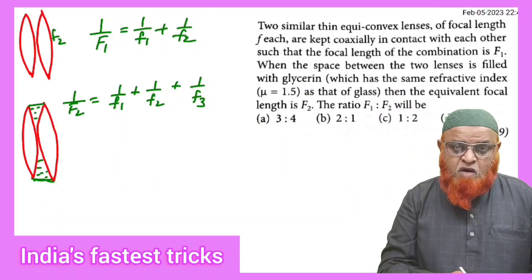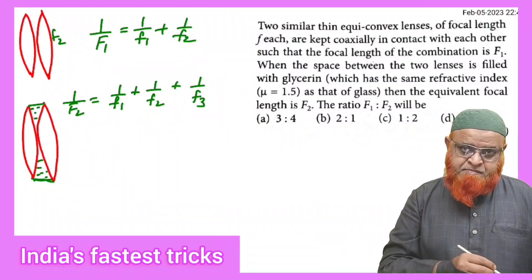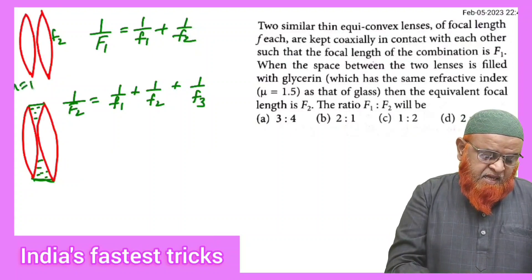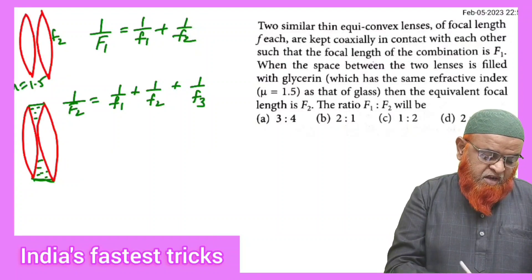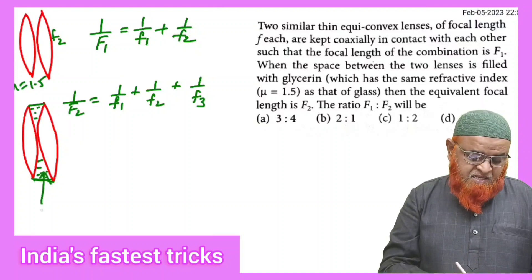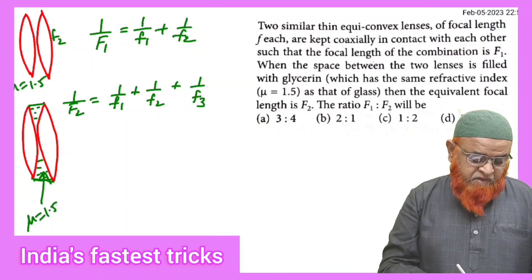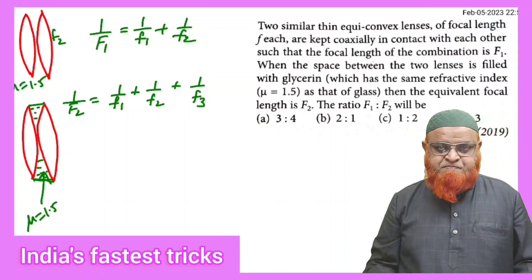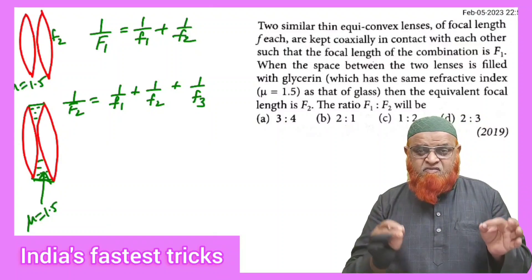In the second case, in between these two convex lenses there is glycerin. The refractive index is 1.5 for both the lenses, and the glycerin also has the same refractive index. When the refractive index of glycerin is 1.5 and the lenses also 1.5, their focal lengths are going to be the same.